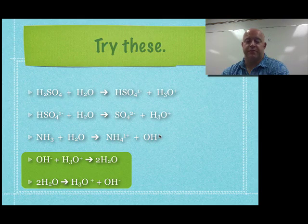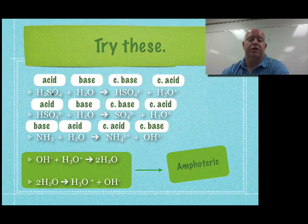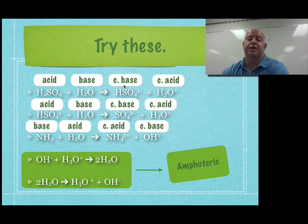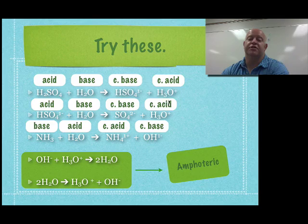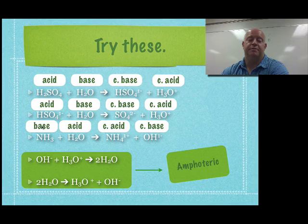Going through the answer key: H2SO4 was our acid; water was our base. The conjugate base is HSO4- (the result of the acid losing a proton), and the conjugate acid is H3O+. If you run this in reverse, H3O+ acts as the acid and HSO4- acts as the base. Same idea for HSO4 1- as acid with its conjugate base shown, and water again as base with its conjugate acid. In the third example, NH3 is the base, forming its conjugate acid NH4+; water is the acid, forming conjugate base OH-.